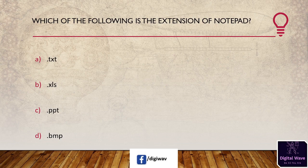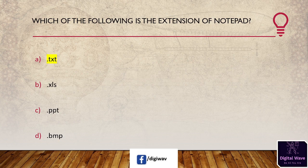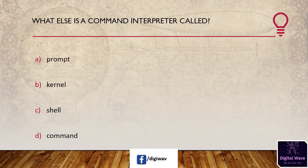Next question: which of the following is the extension of Notepad? Options: .txt, .xls, .ppt, .bmp. The right answer is .txt. The .txt file extension is a standard text document extension that contains unformatted text, and it is the default file extension for Notepad.